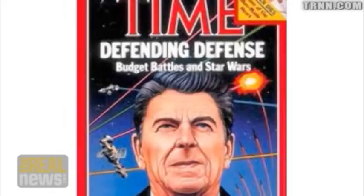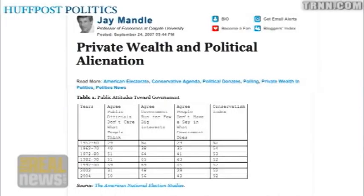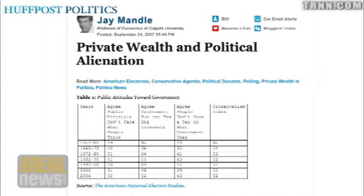Reagan also increases defense expenditures substantially. So this is the new model — it looks very much like the 1920s model. It's also an environment in which money is gaining more control over the political process, so it looks a lot like 1929.